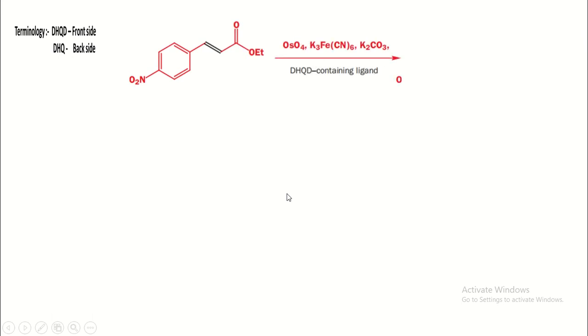Let us discuss the same example. In this reaction, alkene is a trans-alkene and it can be put in the favorable orientation. The ligand is DHQD. Therefore, by using terminology, the hydroxylation takes place from the front side in the product.